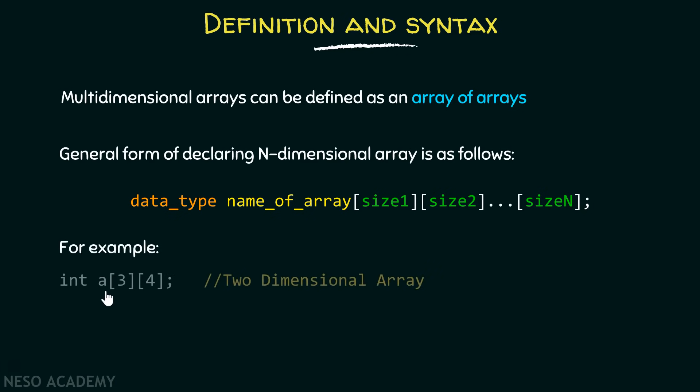For example, suppose I want to declare a two-dimensional array, then it should look like this: you have to specify the data type, the name, and these sizes. If you want to declare a three-dimensional array then it should look like this, and for four-dimensional array you have to specify one more size.